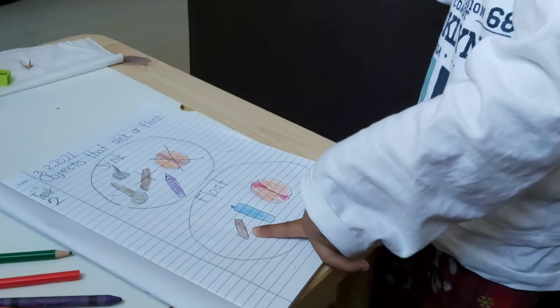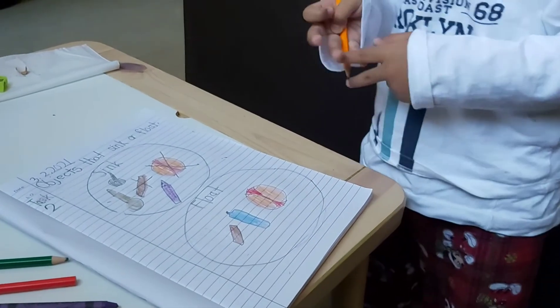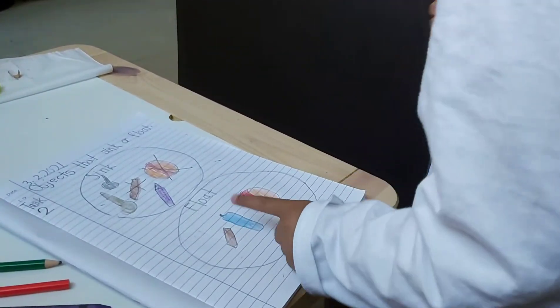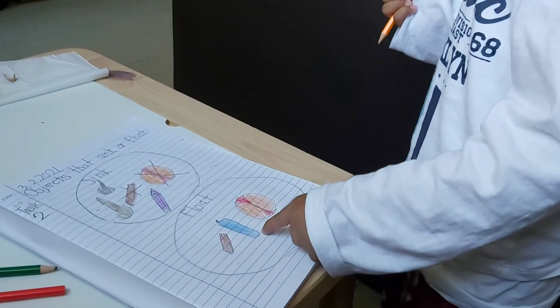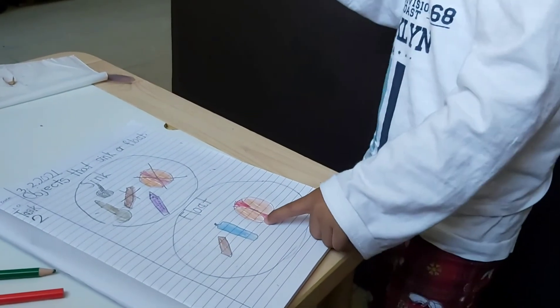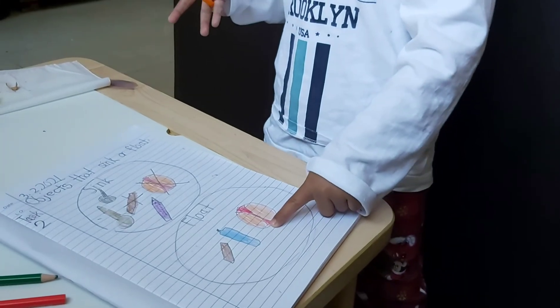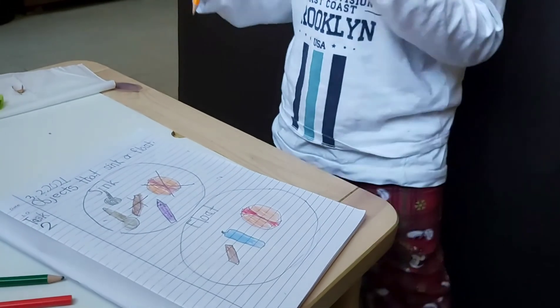Floats are wood floats, water floats, and boat float, and bottle floats.